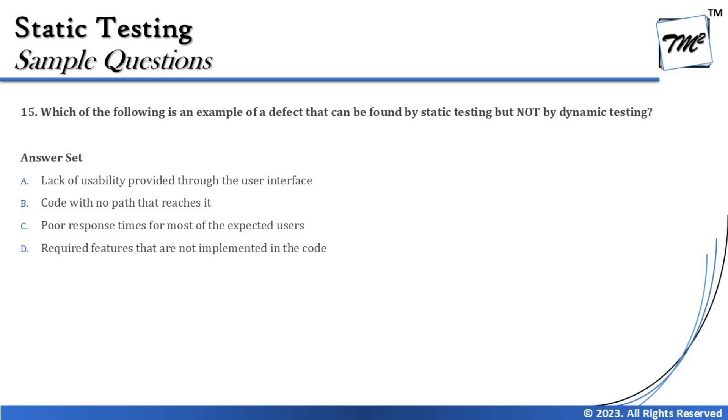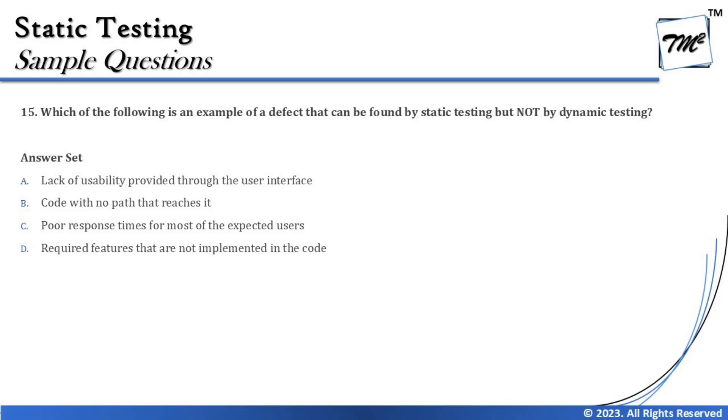Option D says 'required features that are not implemented in the code.' Static analysis has a limitation: it can only analyze code which is already written. This option is clearly referring to something not implemented in the code, so you can only measure it through interfaces or other means — not static testing. Since it's not there, static testing cannot reach that part. So this is not the right answer.